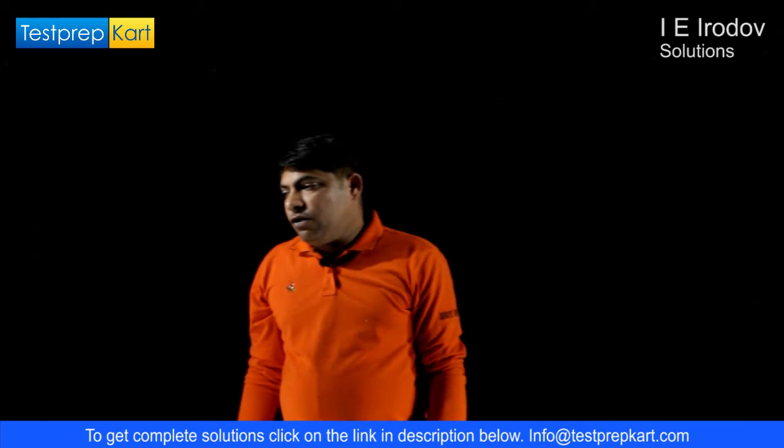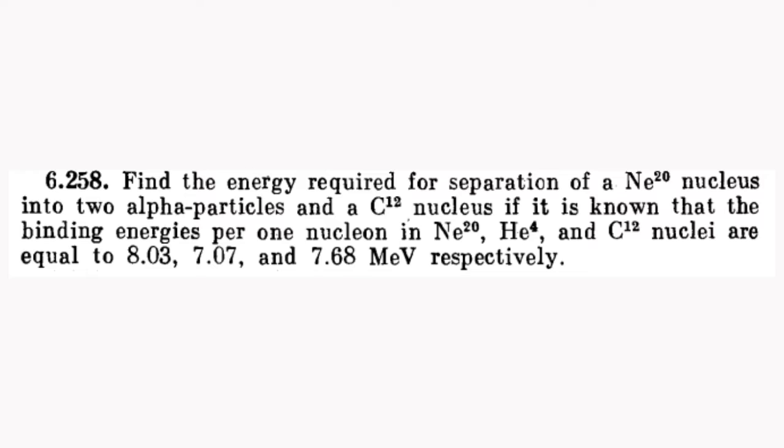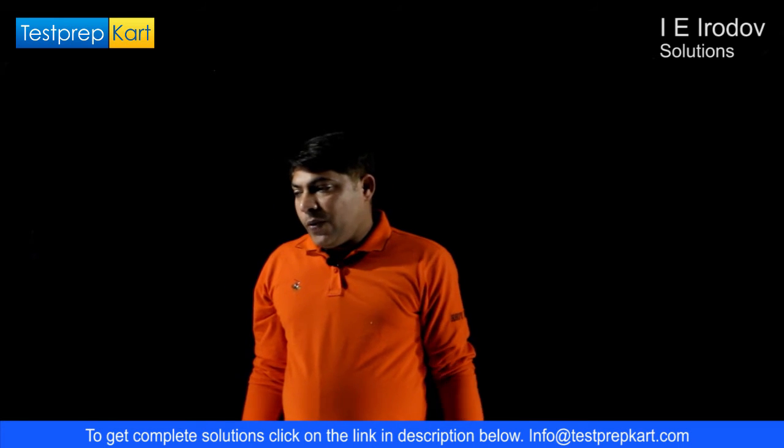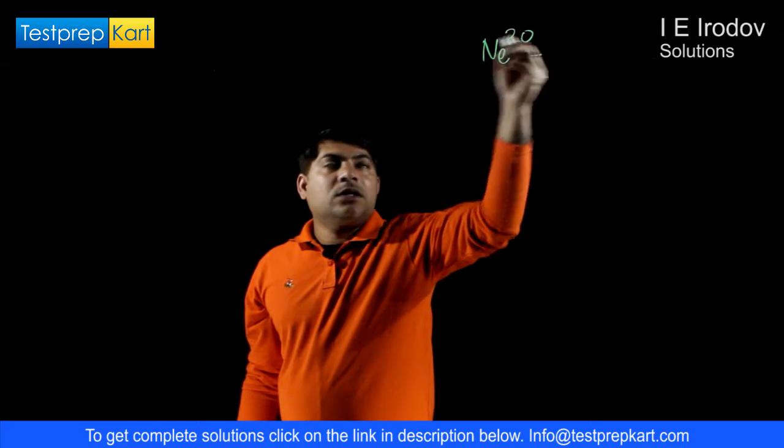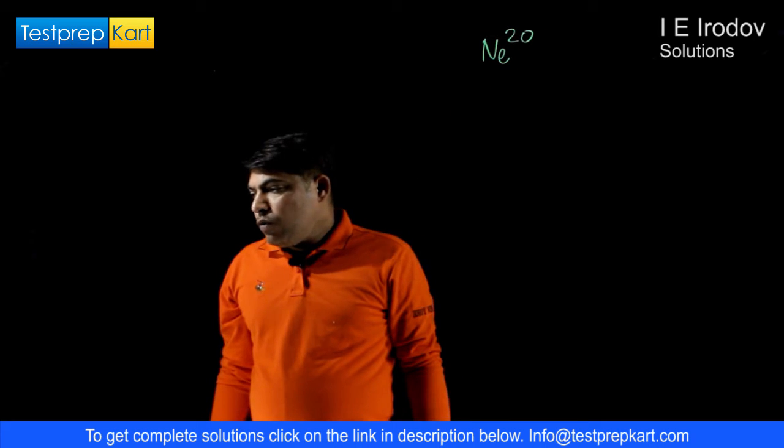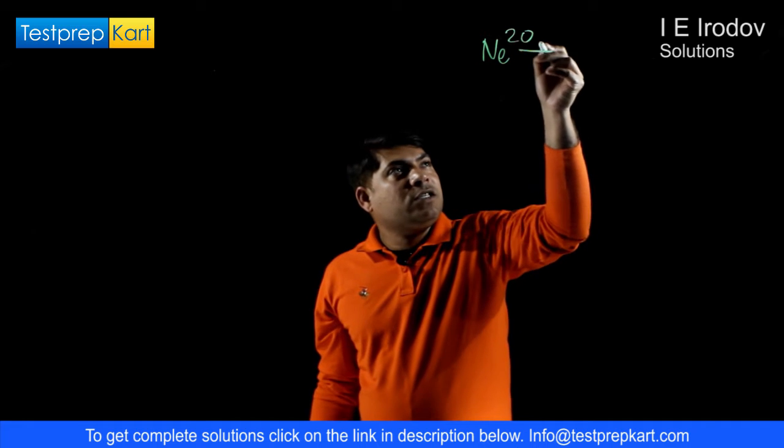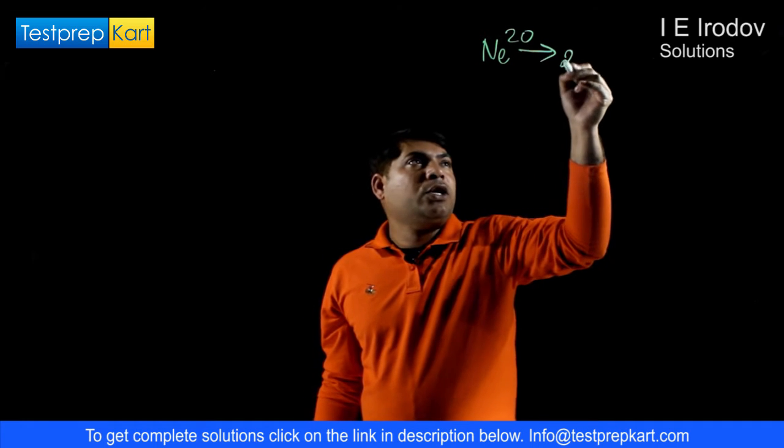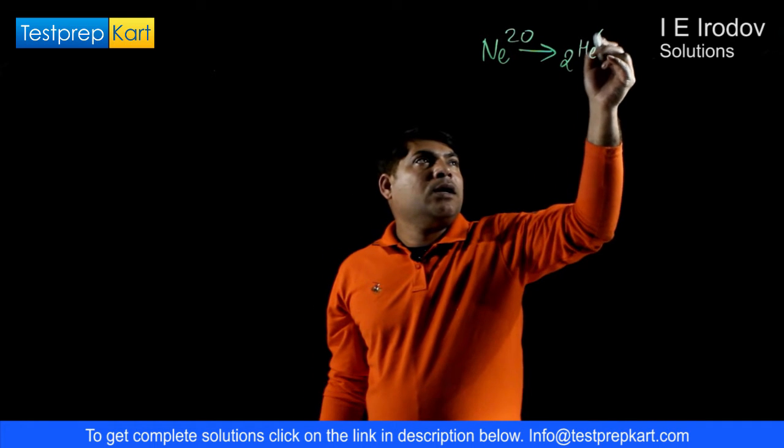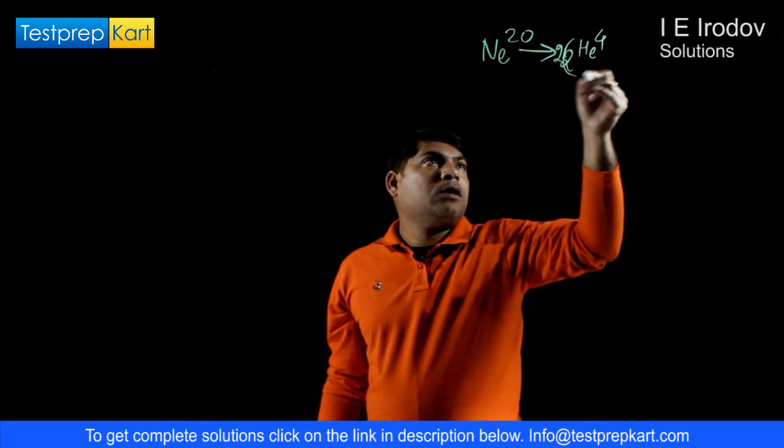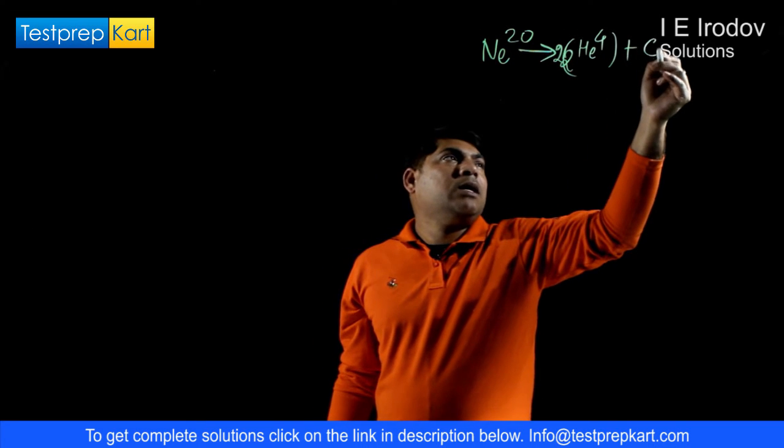Question number 6.258: Find the energy required for the separation of a Neon-20 nucleus into 2 alpha particles and a Carbon-12 nucleus. It means we need to break this Neon-20 into 2 alpha particles and 1 Carbon-12.